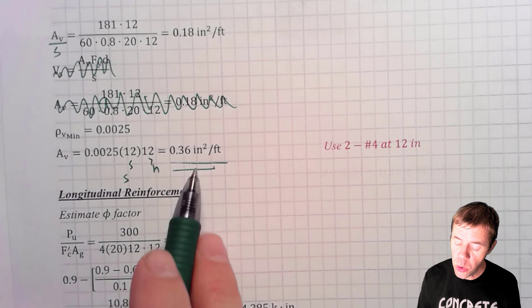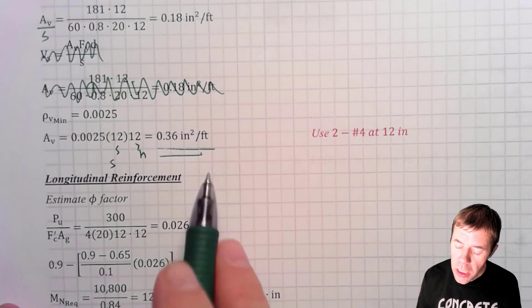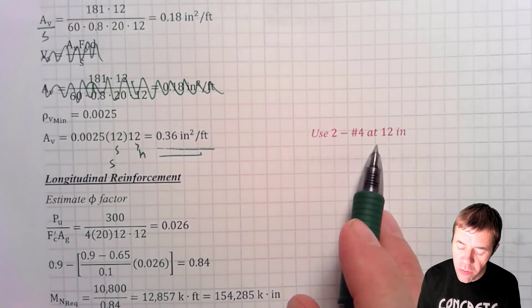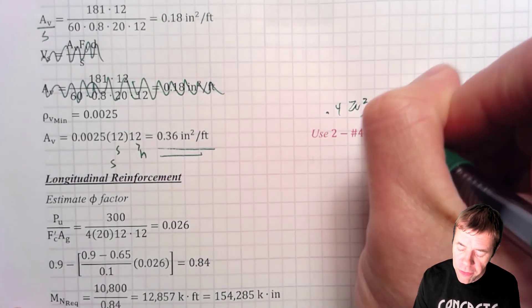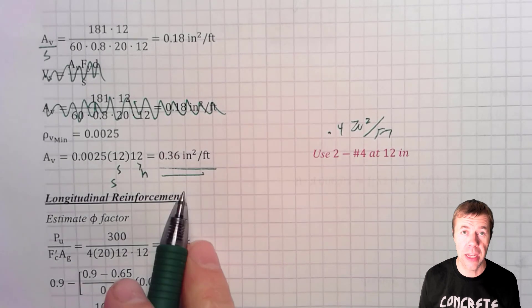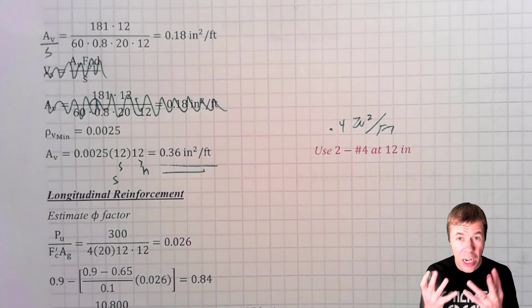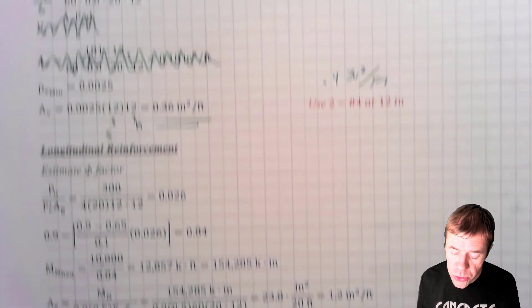I'm going to supply number four bars at 12 inches. That would give me 0.4 inches squared per foot. And that is going to be satisfactory. Now I've already designed my horizontal steel. Now I have to do my longitudinal steel.